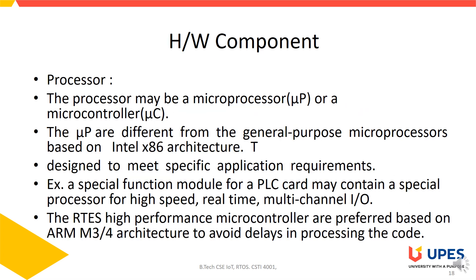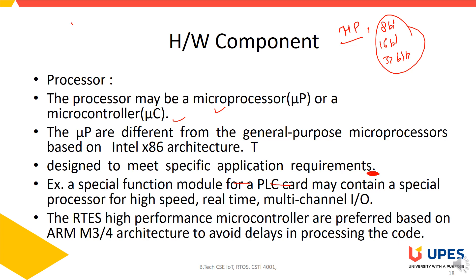Processors used in embedded systems are different from general-purpose architectures — they are designed to meet application-specific requirements. For example, a special function module for a PLC card may contain a special processor for high-speed real-time and multi-channel I/O. Multiple options exist — 8-bit, 16-bit, 32-bit — based on the need. For real-time systems, high-performance microcontrollers are used, mostly ARM-based processors with Cortex-M3 or M4 chips.